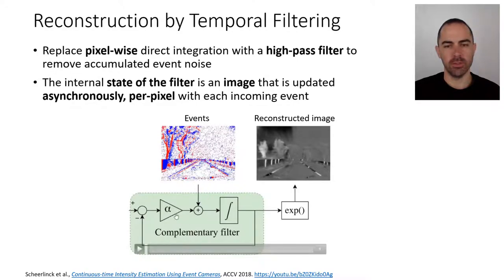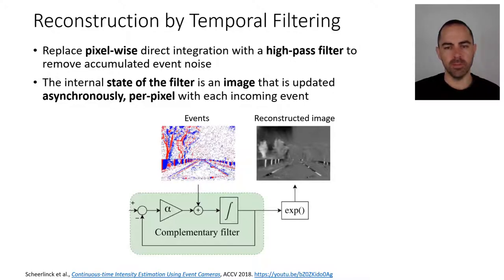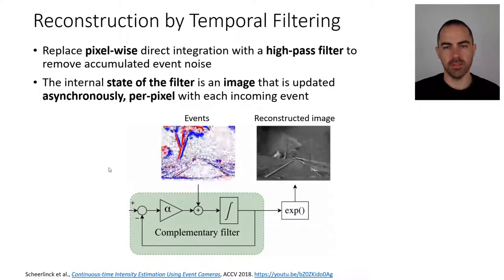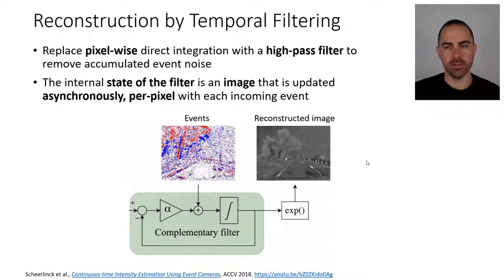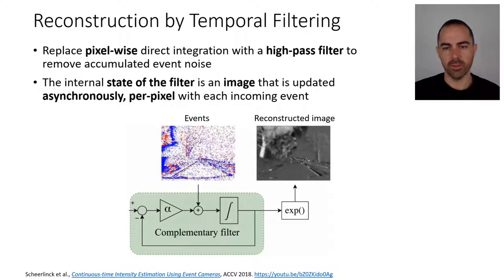Instead — this is called a complementary filter — we just look at this filter when the inputs are only events, not frames, and see the output. It's a deterministic filter, not a probabilistic filter. It has an internal state, which is an image updated on a per-pixel basis asynchronously with every incoming event. The state is then read out. This is the filter in action: you input events, represented as frames but really asynchronous, and get a reconstructed image — it's dark because it was recorded at night.